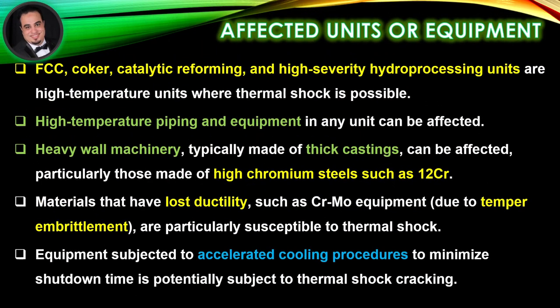Affected units or equipment: FCC, coker, catalytic reforming, and high severity hydro processing units are high temperature units where thermal shock is possible. High temperature piping and equipment in any unit can be affected. Heavy wall machinery, typically made of thick castings, can be affected, particularly those made of high chromium steels such as 12 chromium.